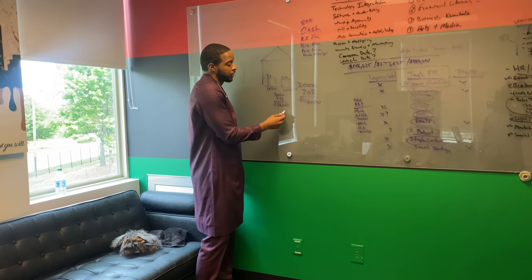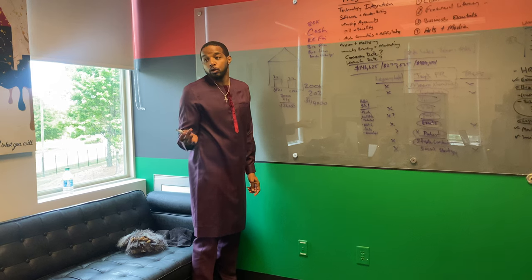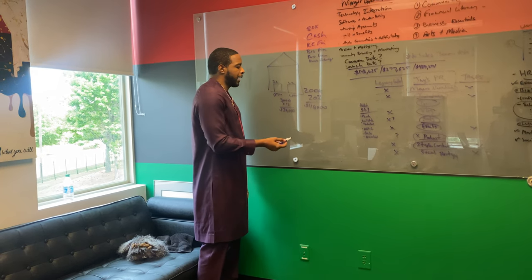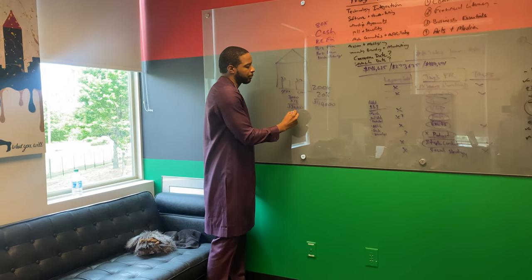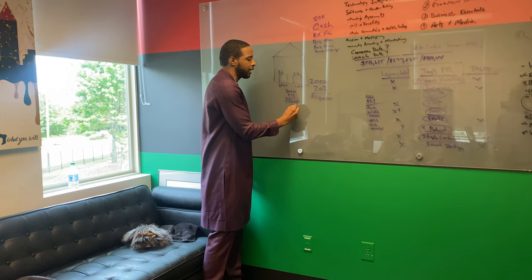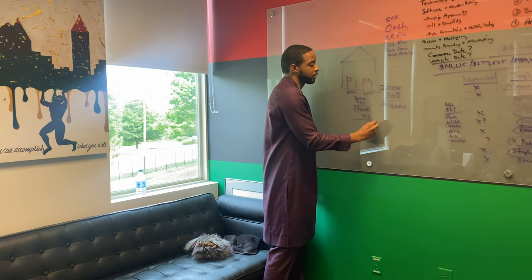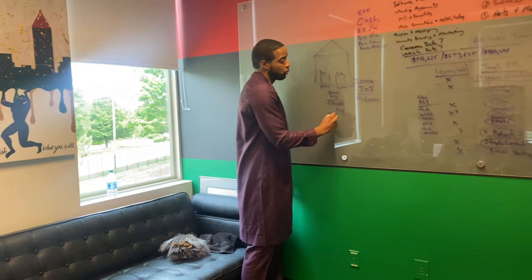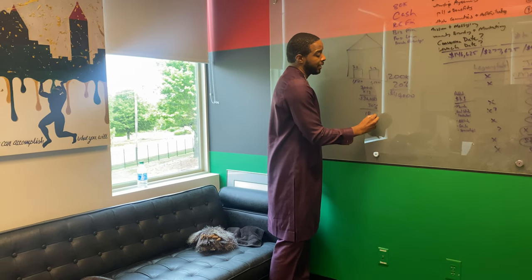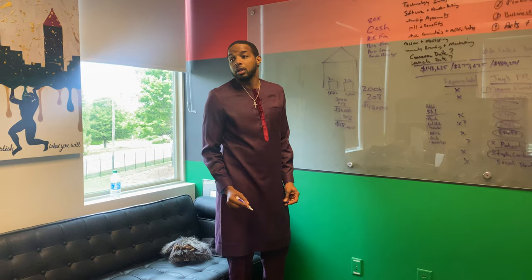That's $36,000 for the year of gross rental income before expenses. And as a soft way of doing it — property management, vacancy rate, utilities, whatever — let's say it's 50% expenses. So you made $18,000 net profit in your rental income.